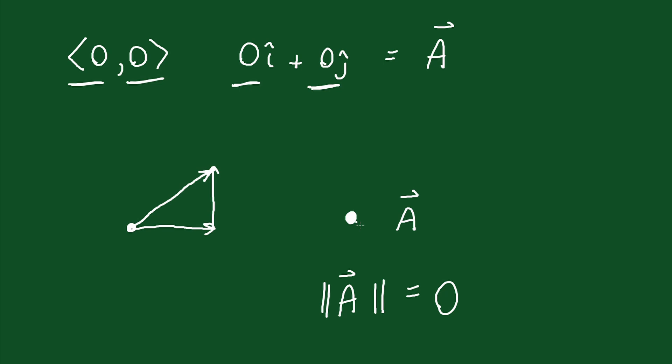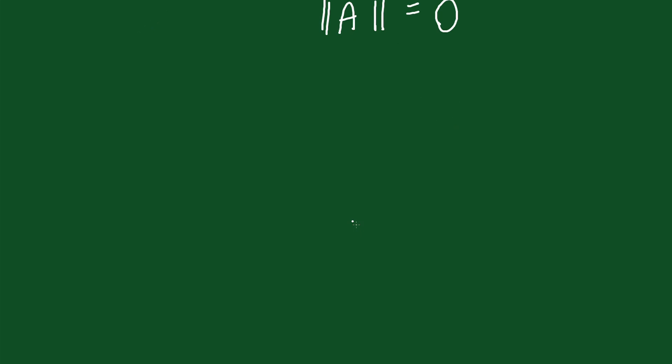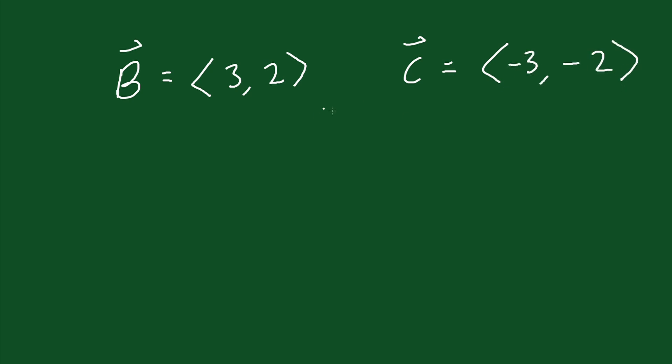Now the zero vector comes into play later on with different concepts. But you should know that the zero vector is something you can get as a result. So let's say, for example, that you have vector B and vector B is equal to ⟨3, 2⟩, and then you have vector C and vector C is equal to ⟨-3, -2⟩, and you decide you want to add these two vectors together. Well, there's different ways you can do it.